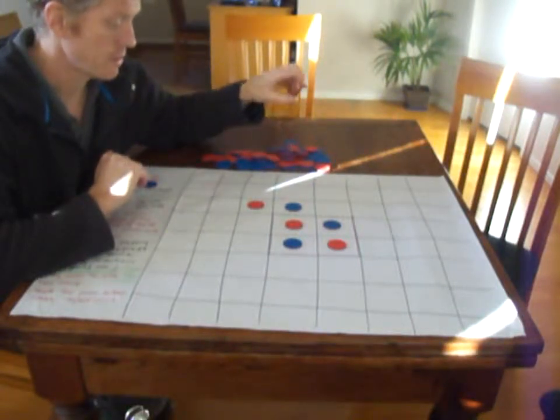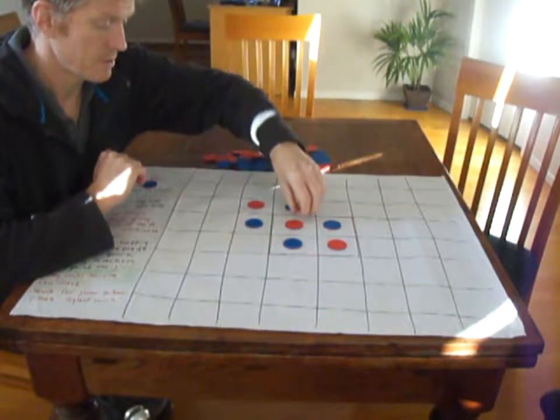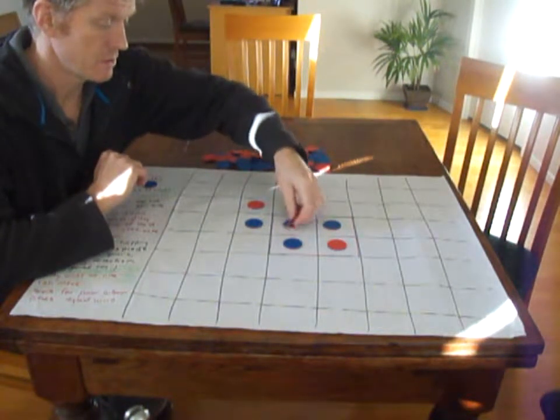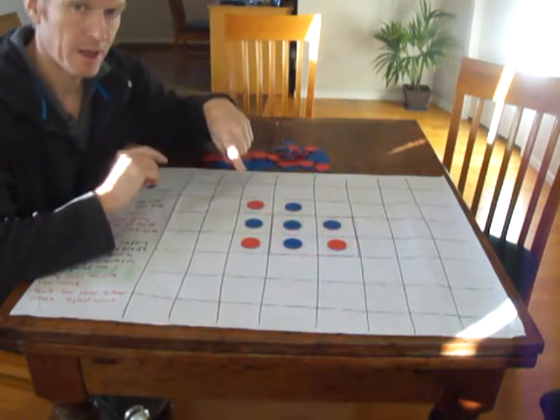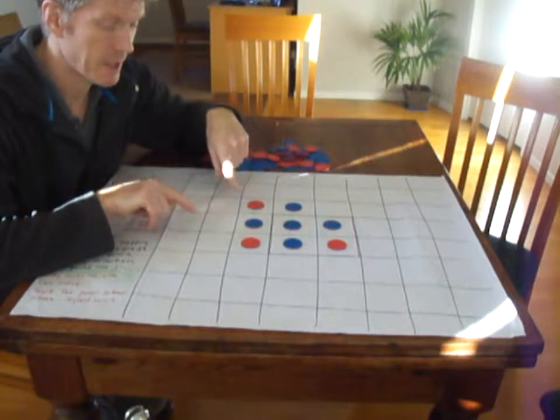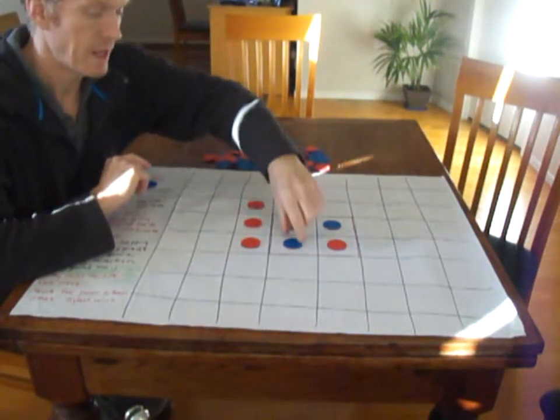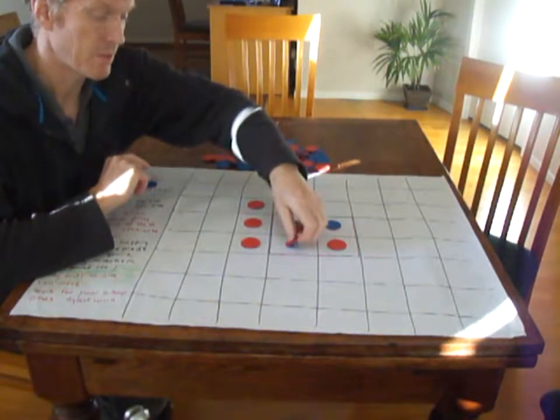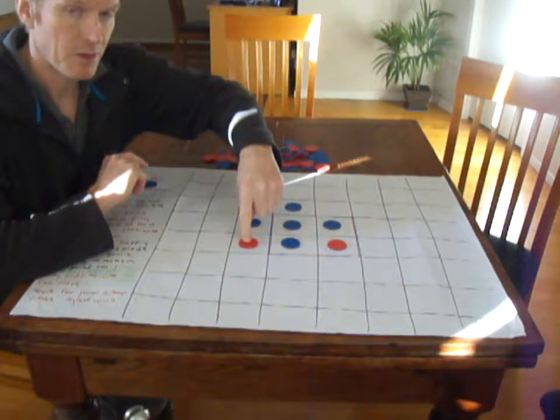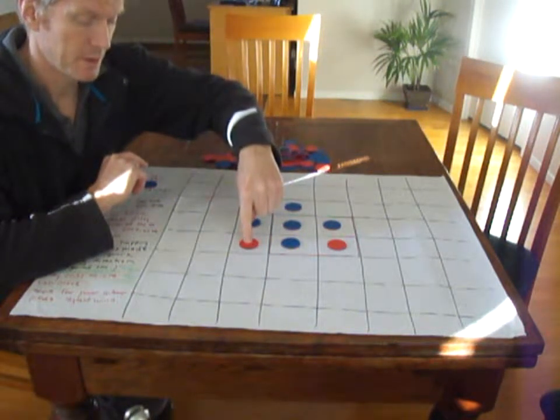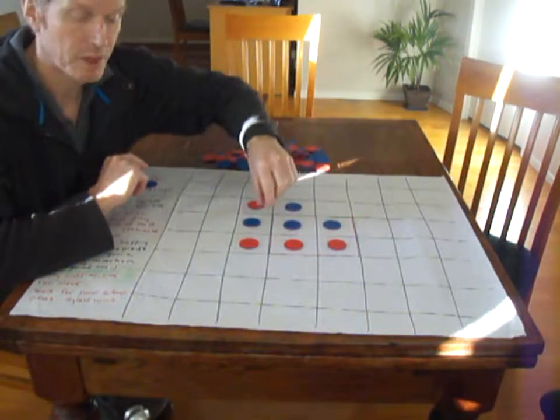As you can see, blue plays again. Here captures this red, turns it into blue. Red may play here. Now red, in playing this space, has captured two counters, one here and one here, in both directions. So long as it's in a row extending from where the counter was played, there can be more than one capture.